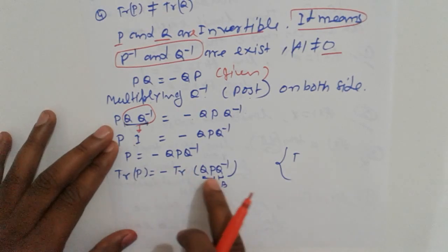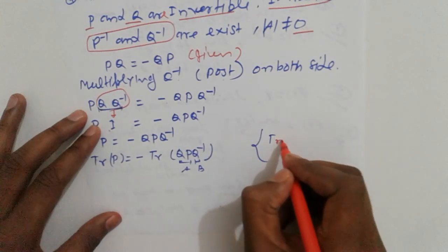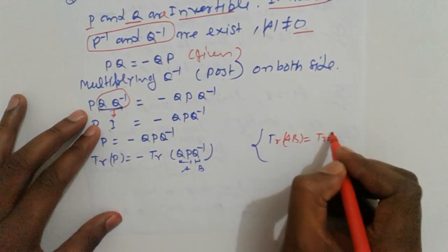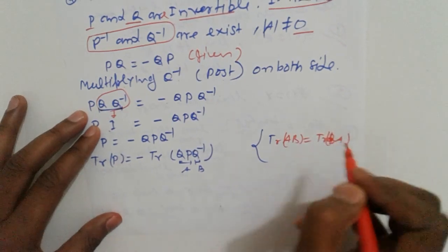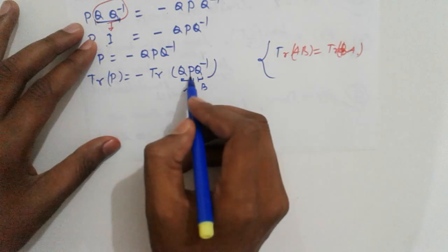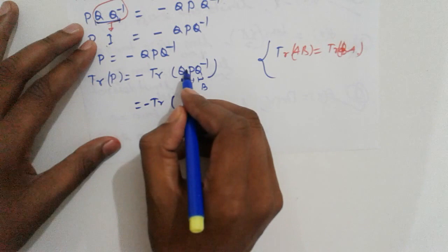In that case, we know that trace of AB is equal to trace of BA. So the arrangement is minus trace of QP.